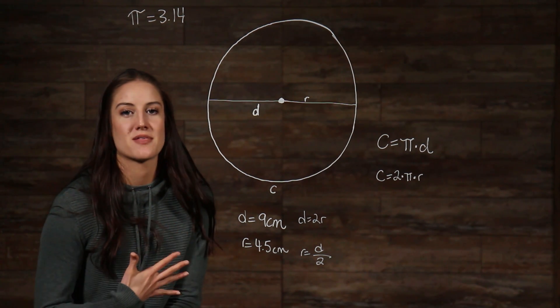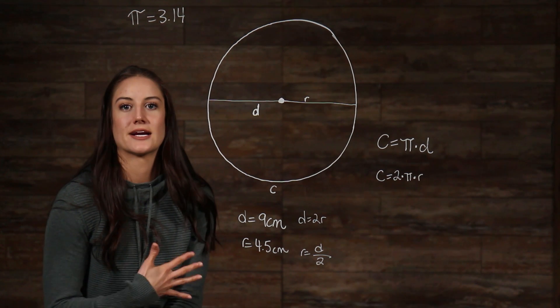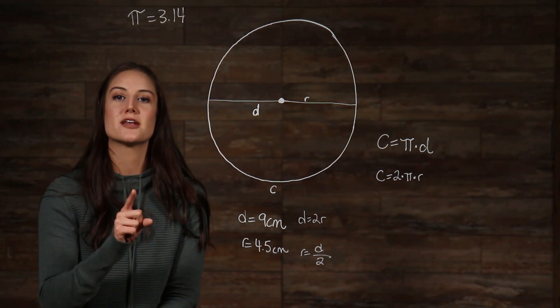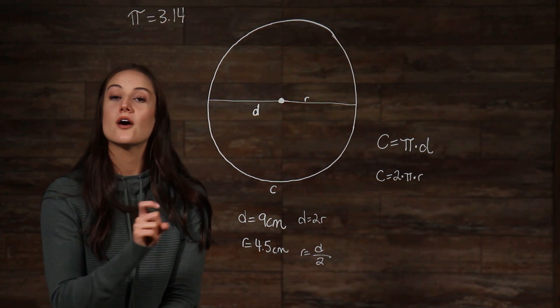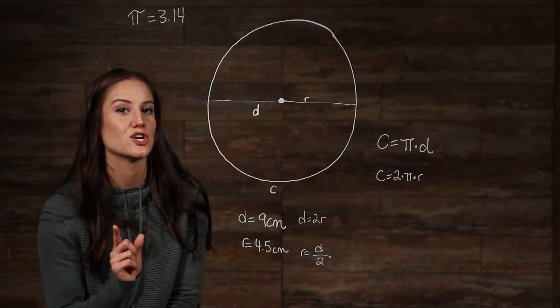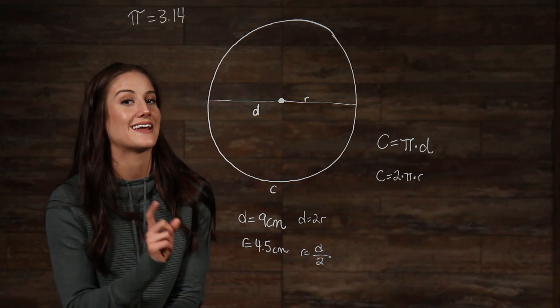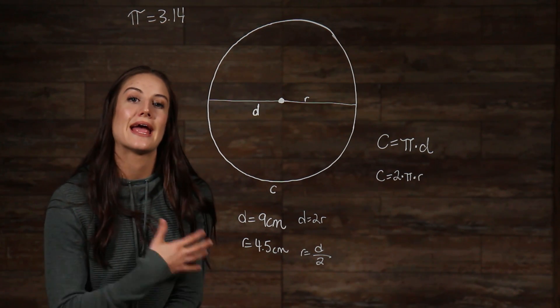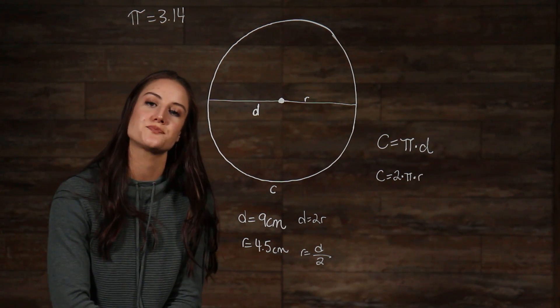Pi is not a random number that mathematicians made up and declared we will multiply the diameter by every time and call it a circumference. On the contrary, pi was discovered to be the constant ratio between the circumference and the diameter. That is why and how we get the formula for the circumference of a circle.